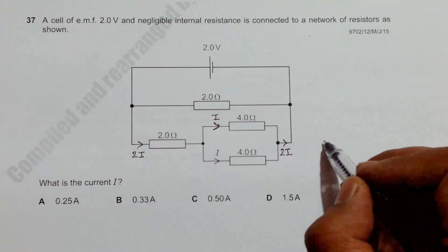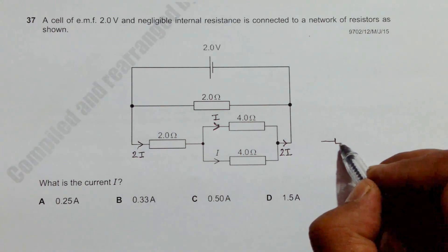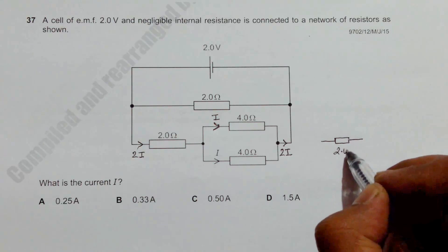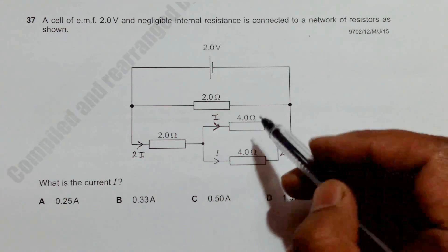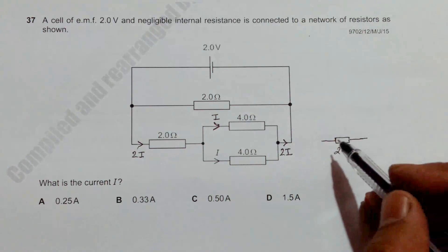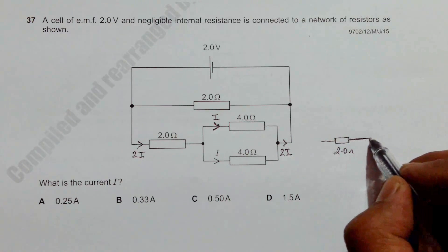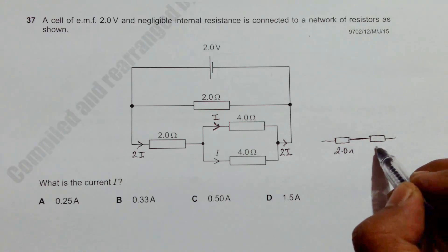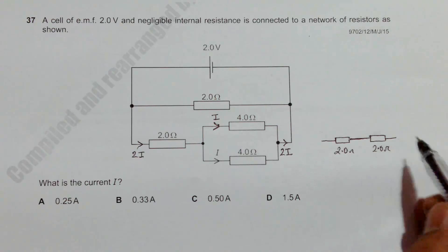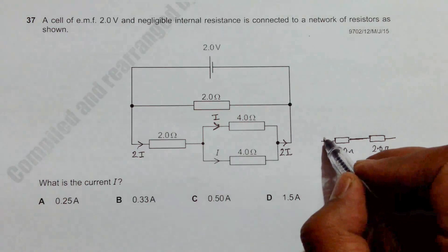Now if you look at this branch, it will appear like this: we have a 2.0 ohm resistor here, and these two resistors will be acting like a single resistor of resistance 2.0 ohm because the parallel of 4 and 4 will be 2 ohm.